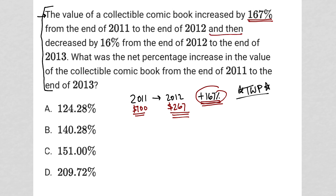Next, the problem says the value decreased by 16% from the end of 2012 to the end of 2013. The 2012 price is $267. I can't easily figure out 16% of $267 directly, so I'll use 84% instead — if you're reducing the cost by 16%, the total cost will be 84% of the original. So $267 times 0.84, let's put that in the calculator: $267 × 0.84 = $224.28.